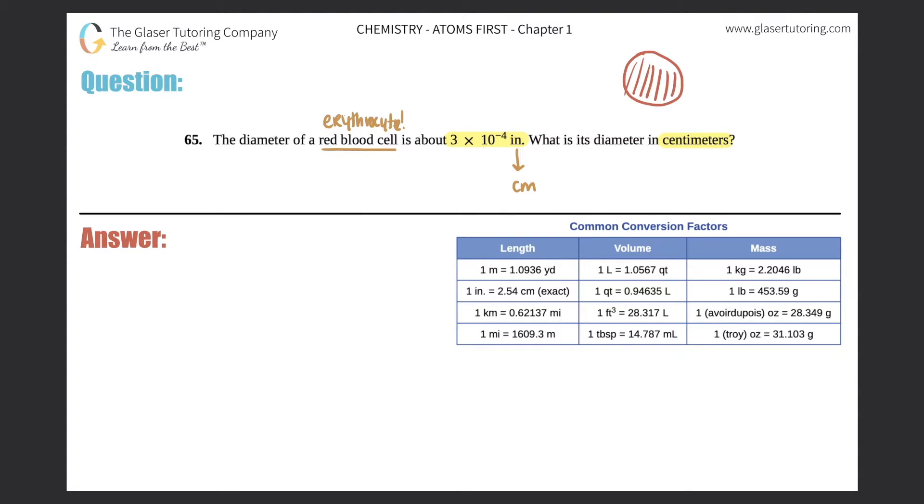Here's my red blood cell. The diameter, which means from one point to the other, the full distance is 3 × 10⁻⁴ inches, and we need to convert that into centimeters. So for every conversion question, I like to do a road map.